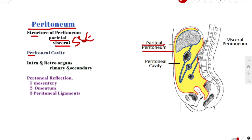The parietal peritoneum lines the internal surface of your abdominal pelvic wall. This is the outer layer of the peritoneum which covers your abdominal pelvic wall. It is derived from your somatic mesoderm, and it receives the same somatic nerve supply as the region of the abdominal wall that it lines.